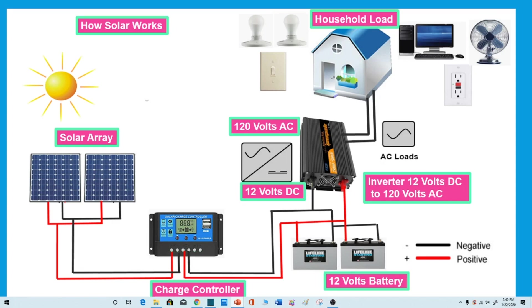A charge controller or regulator is basically a voltage regulator to keep batteries from overcharging. It regulates the voltage coming from solar panels going to the battery. Most batteries need around 14 to 14.5 volts to get fully charged.